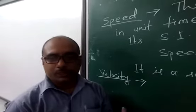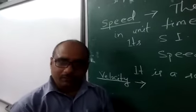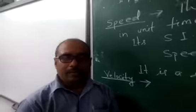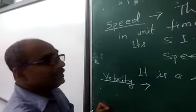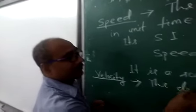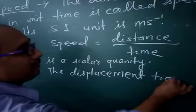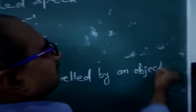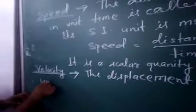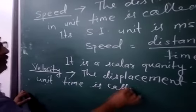In speed and velocity, the major difference is speed is a scalar quantity and velocity is a vector quantity. Speed is without any direction and velocity is with direction. So we write for velocity: the displacement traveled by an object in unit time is called velocity.